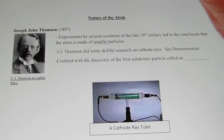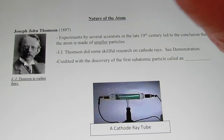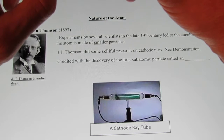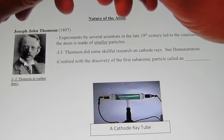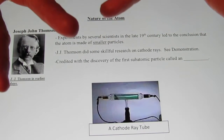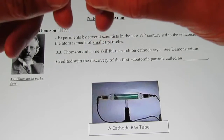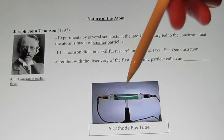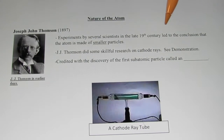Continuing on with that discussion, in the very late 1800s, Joseph John Thomson came on the scene and did an experiment with a cathode ray tube. I'm going to show you a quick demonstration related to what a cathode ray tube is and what subatomic particle J.J. Thomson discovered by using it. We'll go to that demonstration now.